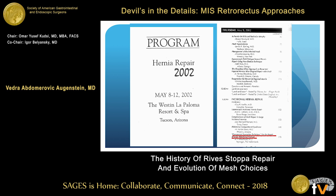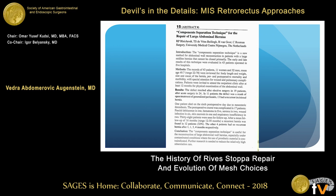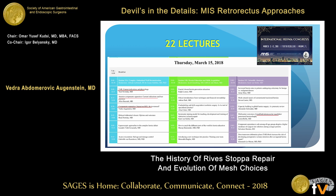Interestingly, the first America's Hernia Society meeting was in 2002 in Tucson, Arizona. There was only one lecture on component separation, from the Netherlands. Looking at their abstract, the last statement says: 'Further research is needed to reduce the relatively high re-herniation rate.' Fast forward to March 15, 2018 — just a month ago at America's Hernia Society in Miami — and we have 22 lectures on component separations, many of those including robotic, laparoscopic, and a lot of things you're going to see in this session today.